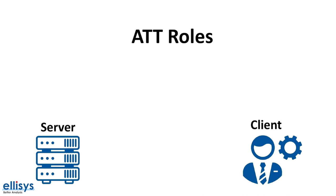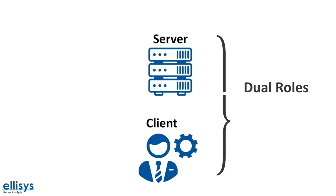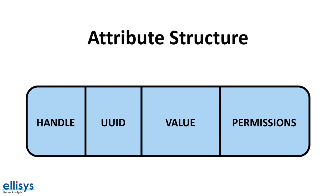Keep in mind that a device can act in both roles — server and client — at the same time. An attribute is structured as follows: it includes a handle, an attribute type or what's called the UUID, a value, and a set of permissions. Now let's talk about each of these in detail.